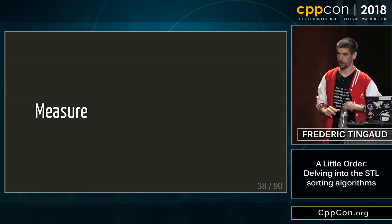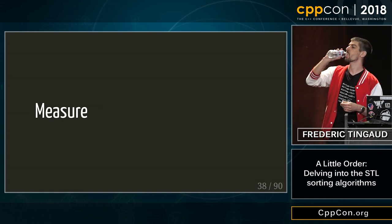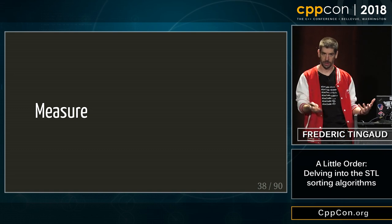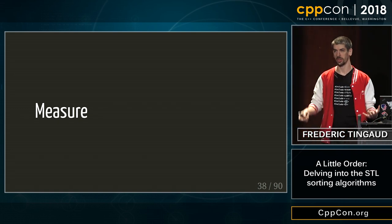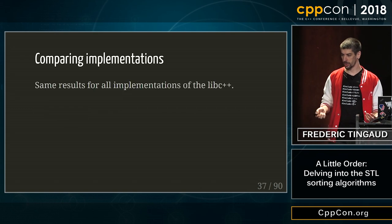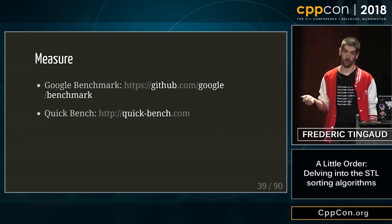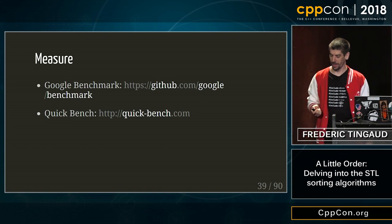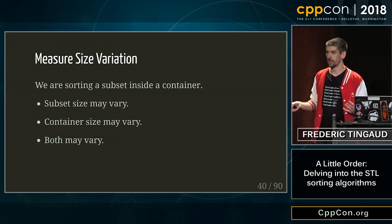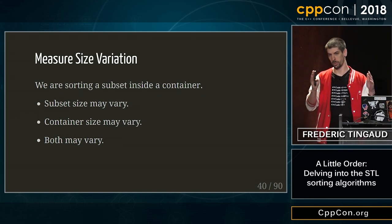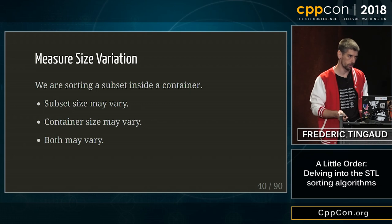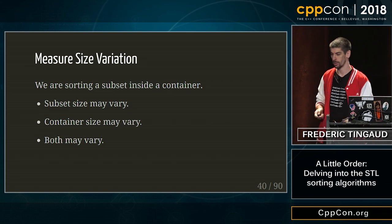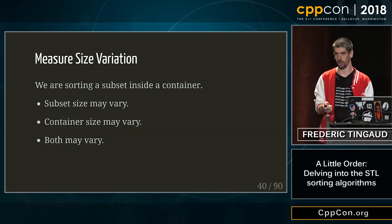Next thing we can do is measure. We've been working with exactly one size of container and one size of subset sorted. Let's try with different sizes. We can use Google Benchmark from GitHub or quickbench. We are going to first vary the size of the subset we sort — we've been sorting half the elements, what happens if we sort more or less? Then we do the opposite and change the size of the full container with the same subset size. Then we vary both at the same time.